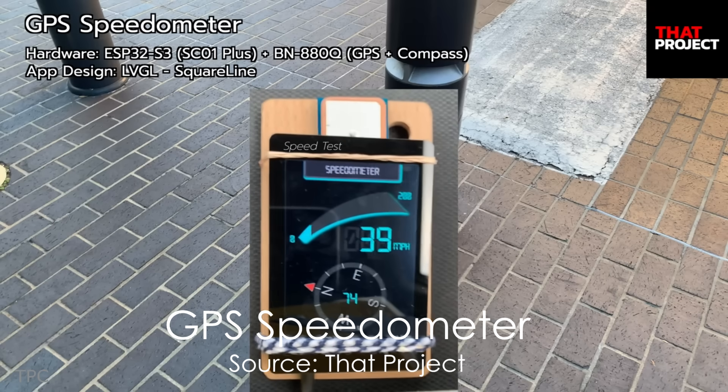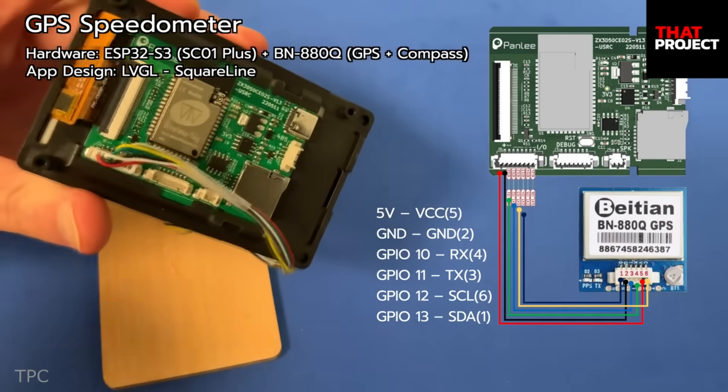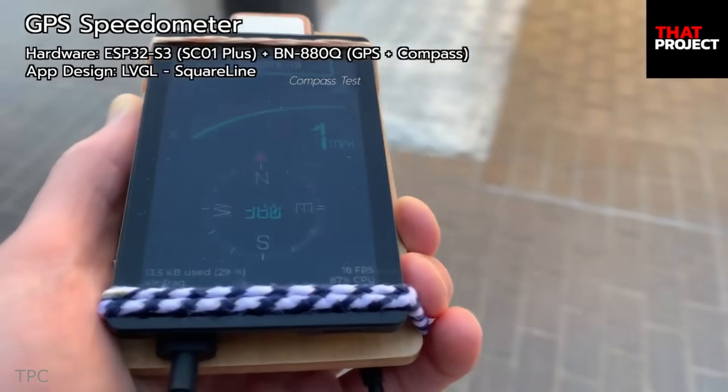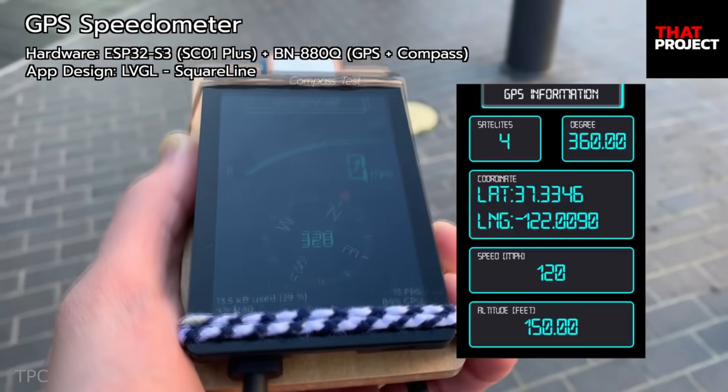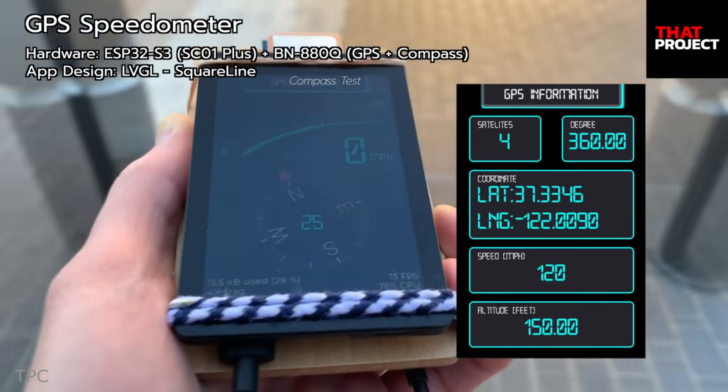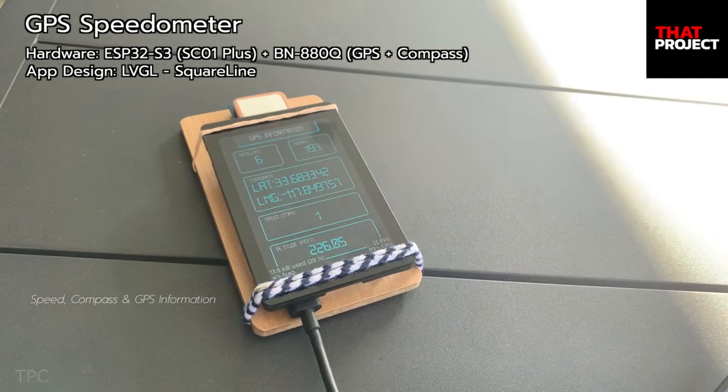Eric created a simple GPS speedometer. This application runs on an MCU and is designed to display real-time speed and direction information, along with other GPS data such as coordinates, altitude, and the number of connected satellites. The project is developed using LVGL, light and versatile graphics library, for the graphical interface, with the graphical widgets created using SquareLine.